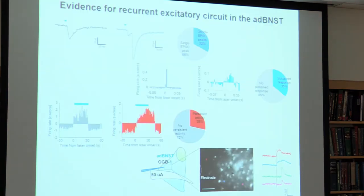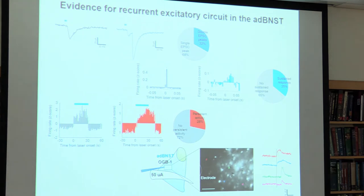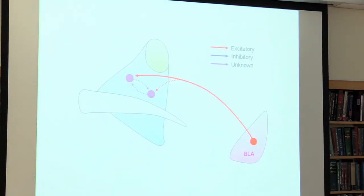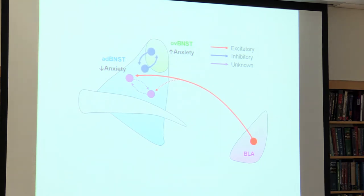We also found several lines of evidence for recurrent excitation, shown by doublets of EPSC peaks, sustained excitation in response to a single light pulse or light pulse train, and even to a very short electrical pulse—supported by patch-clamp, in vivo recording, and calcium imaging data. Based on these data, we proposed a circuit model where BLA afferents elicit direct excitation in the ADBNST and also elicit recurrent activity. We then studied the circuit relationship between the oval BNST and the ADBNST, which showed opposite functions—so we considered that the two sub-regions might inhibit each other, enabling efficient flip-flop-like switching between high and low anxiety states.